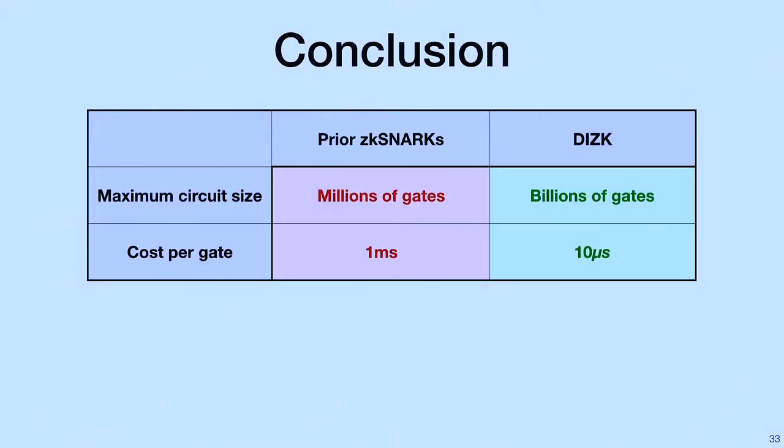In conclusion, we found that prior ZK-SNARKs support maximum circuit sizes in the millions of gates at an amortized cost of one millisecond per gate. We find that our techniques for DIZK are able to support maximum circuit sizes of billions of gates at an amortized cost per gate of 10 microseconds.